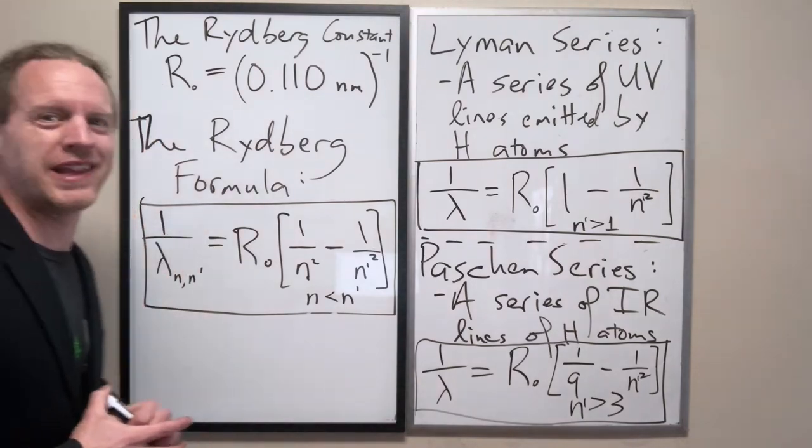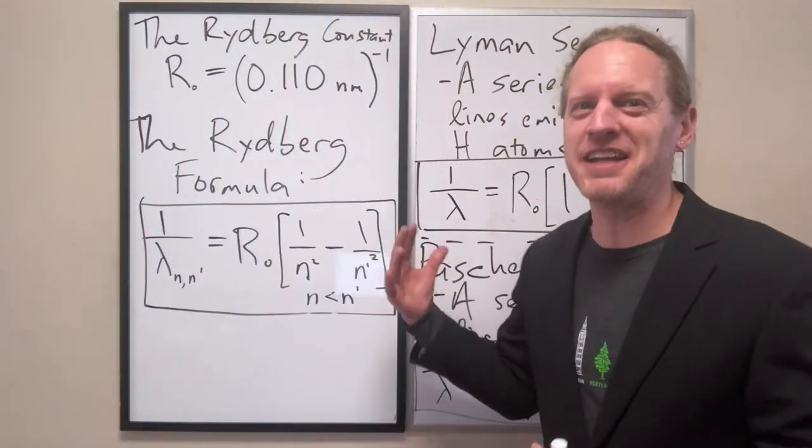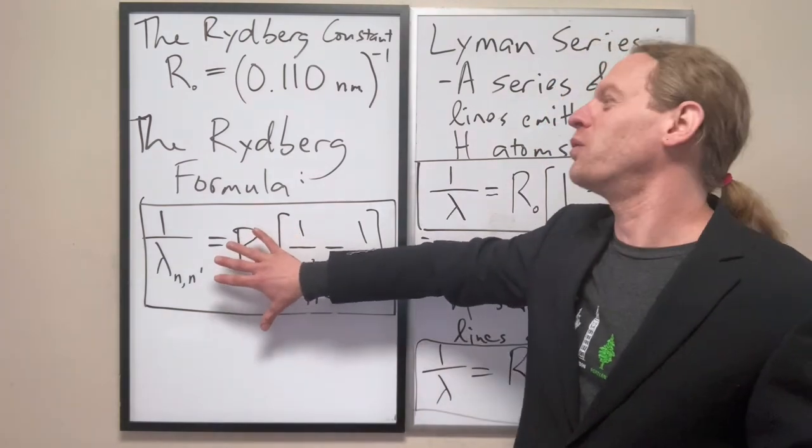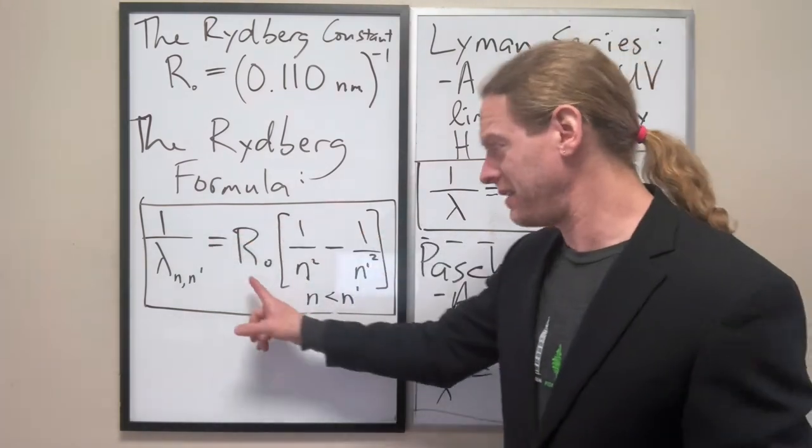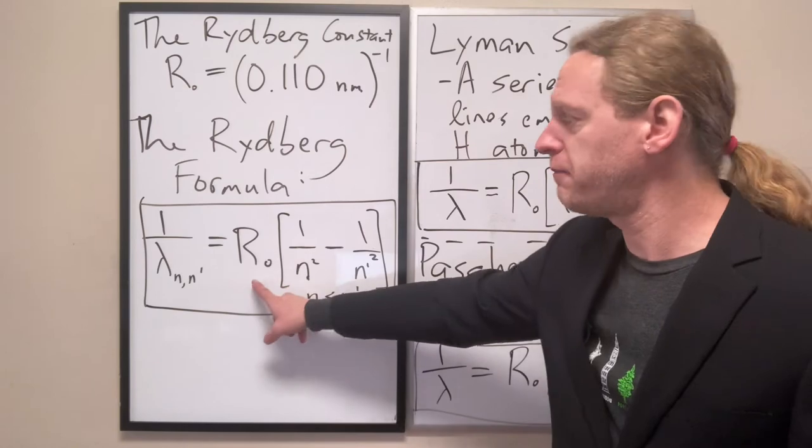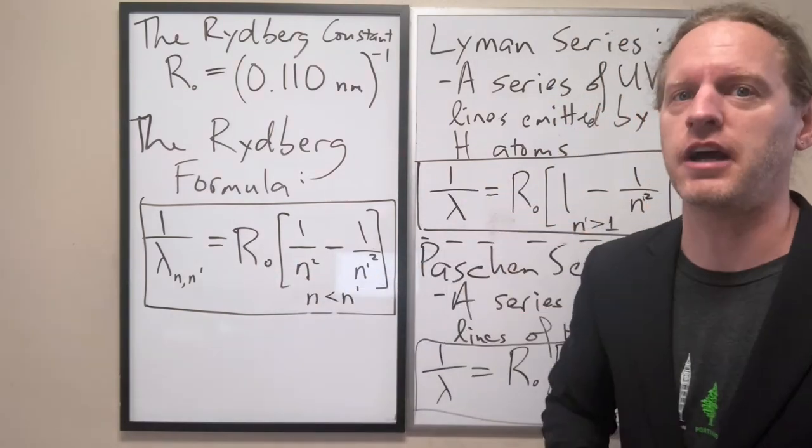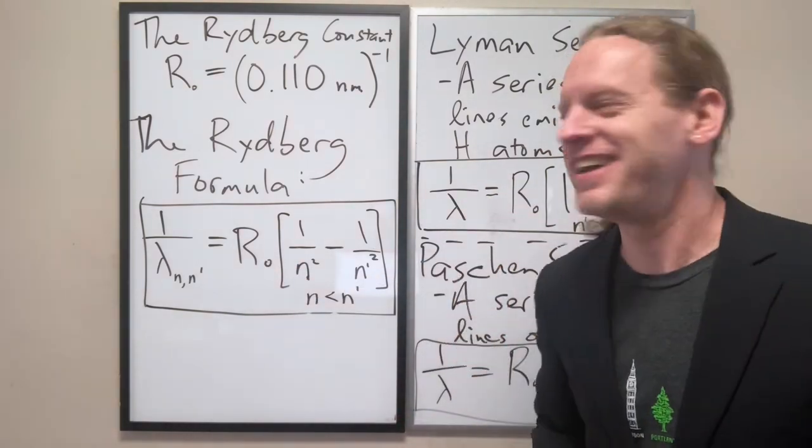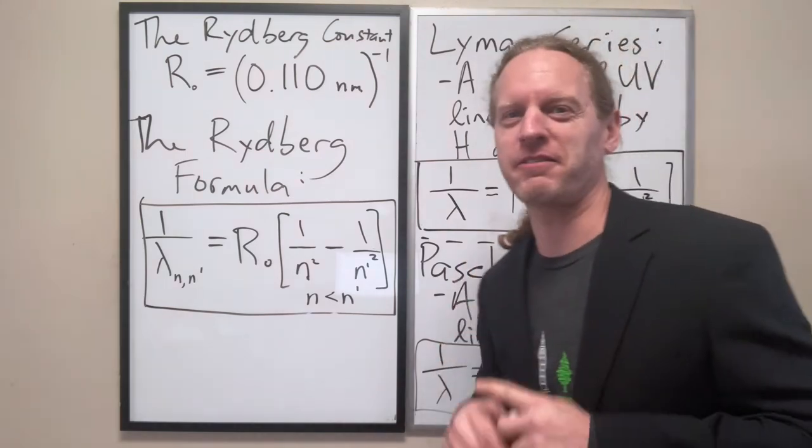So this is the Rydberg formula though, and this is maybe the most exciting formula about the hydrogen atom that was not due to Bohr. And I'll say more precisely though, this is the formula that Bohr based his theory on, or at least that he should have if he was doing it right. So I'm going to pause here for a moment.